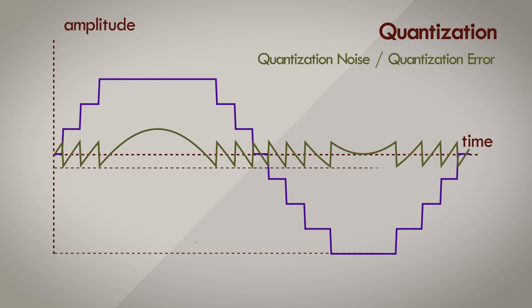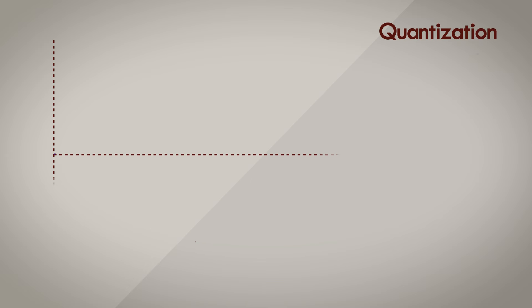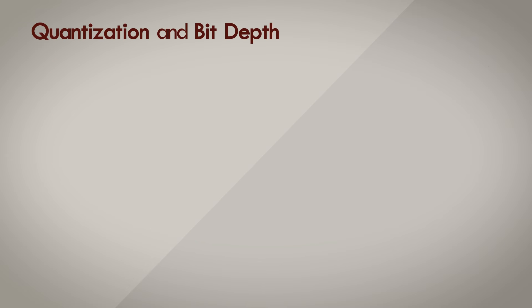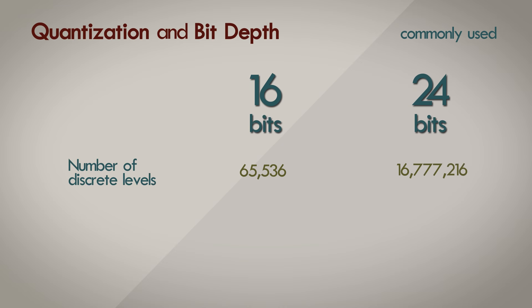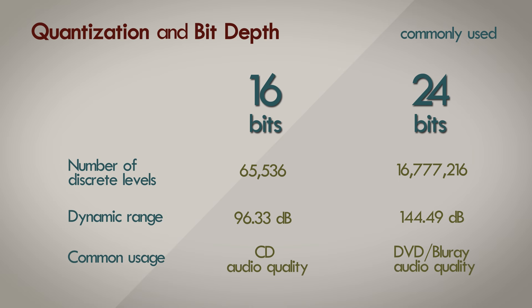In all but the worst circumstances, quantization and bit depth isn't something that you need to worry about. Choosing a default bit depth anywhere between 16 to 24 bits on your audio converters or programs should do you perfectly well in most situations. Modern advances in digital technology can let you get away with bit depth as low as 8 bits and still offer better dynamic range than an analog medium like cassette tape. So is it worth studying about it then?